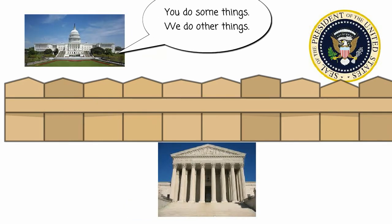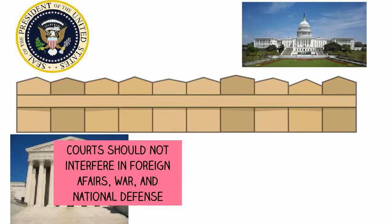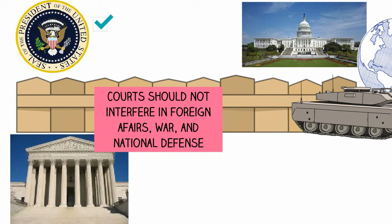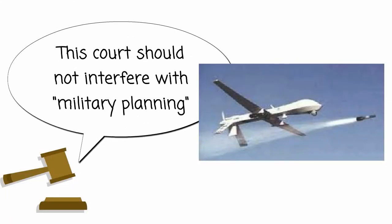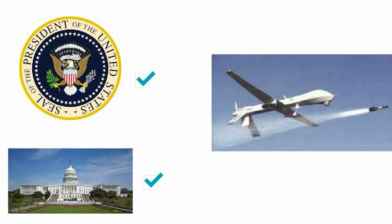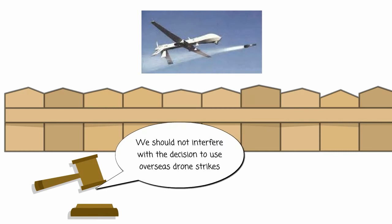Each branch of government should be careful not to interfere with responsibilities and powers reserved for other branches of government. The judicial branch should avoid interfering in areas of responsibility reserved for the executive branch and the legislative branch. The court in Mr. Aulaki's case observed that foreign policy, war, and national defense are normally areas reserved for the President and Congress, but not the courts. The court was concerned that judges should not interfere with military planning. If the other branches of government made the decision to use a drone strike against a terrorist overseas, the court should not interfere. According to the judge, the judicial branch should not interfere with the war and national defense decisions made by the executive and legislative branches.